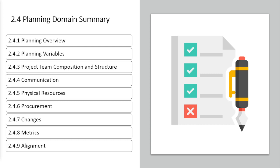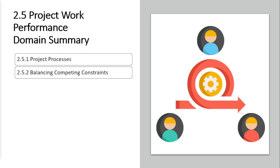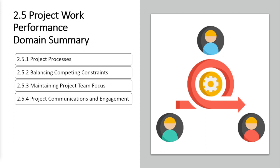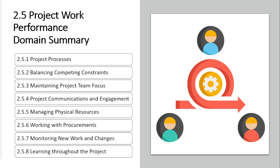The fifth domain is the project work performance domain. Here we address project processes, balancing competing constraints — your knowledge of the triple constraint triangle will come in handy — maintaining project team focus, managing project communications and engagement, and managing physical resources. Things you would see under the executing process group fall in here. Working with procurements, monitoring new work and changes, and the concept of learning throughout the project — referred to as managing project knowledge in the 6th edition — are all part of this discussion.